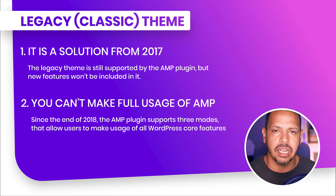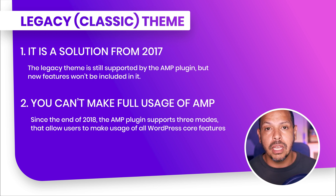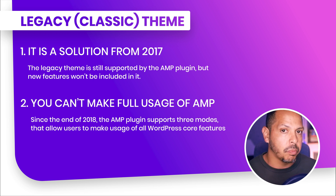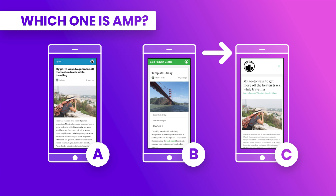But if you want to make your AMP version make full usage of all functionality from the WordPress core, the ideal scenario is to use one of the other alternatives. Since the end of 2018, when the three different modes were introduced, the WordPress AMP plugin allows users to make use of all features from the WordPress core. So in the ideal scenario, use option B or C. Option B has some custom CSS and custom code that I will show you today. Option C is reader mode with a compatible theme — in this case the Astro theme — where you have hundreds of options to customize your website without any code.